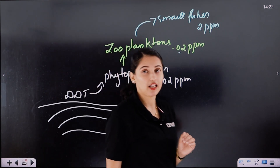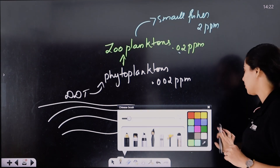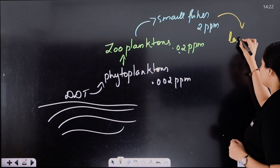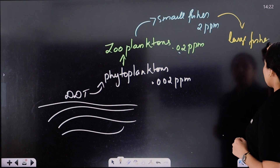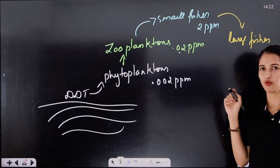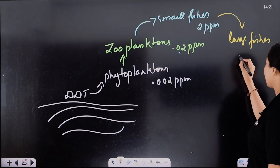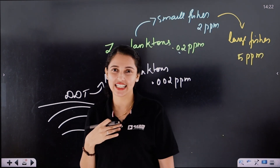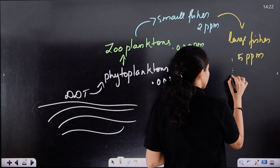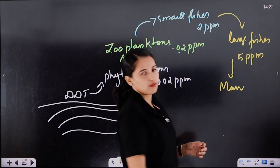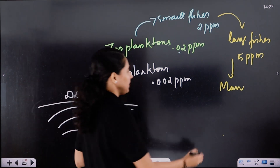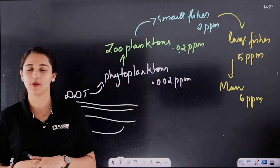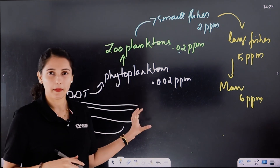Because this amount is non-biodegradable, it does not break down. Small fish are eaten by larger fish, and then birds eat the larger fish. Now we have about 6 parts per million of this chemical in the bird's body. So as we go to higher trophic levels, the chemical amount becomes higher.